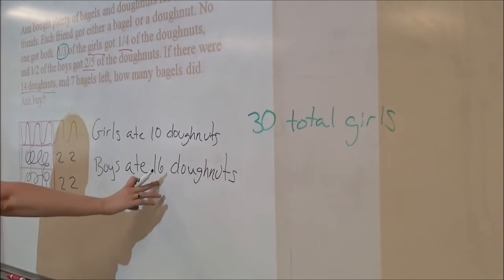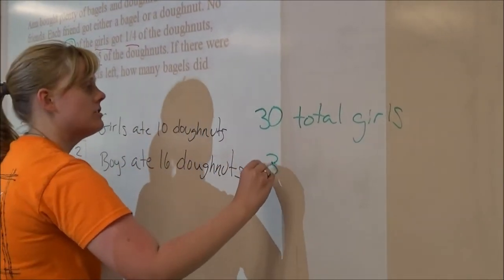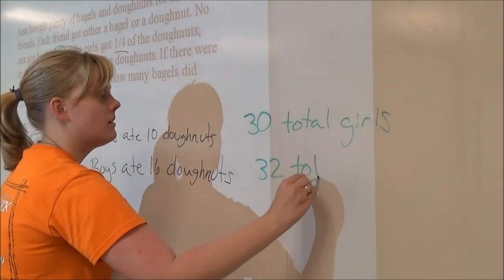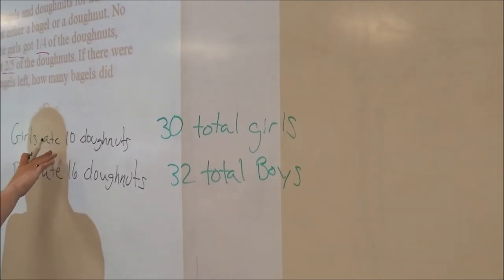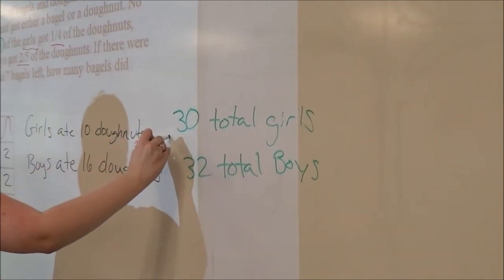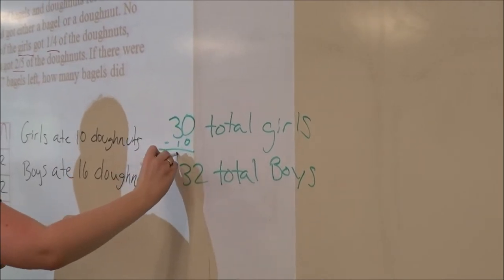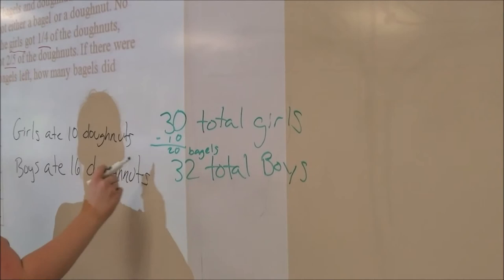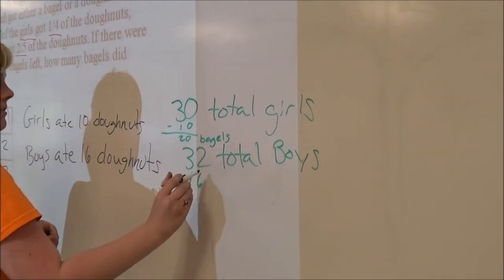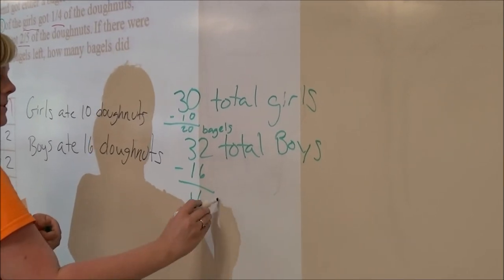If 16 is one half of the boys, then we know that there's 32 total boys. We already know how many doughnuts they ate, so 10 doughnuts taken away from 30 girls leaves 20 bagels, and 16 taken away from 32 is 16 bagels.